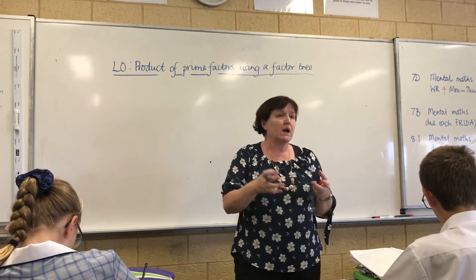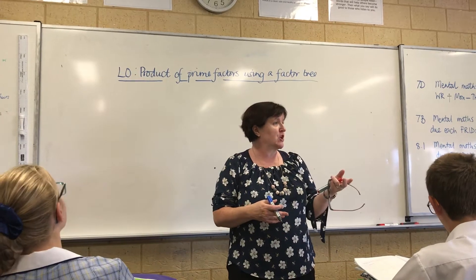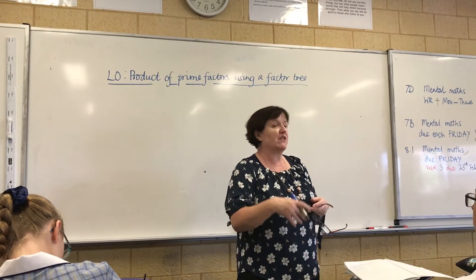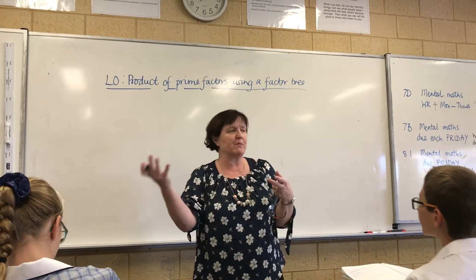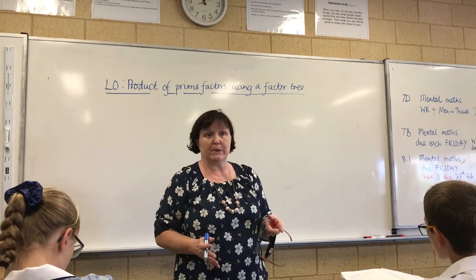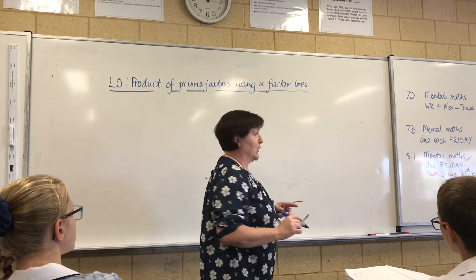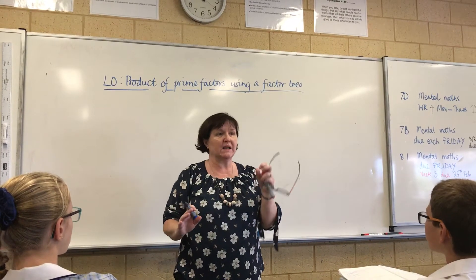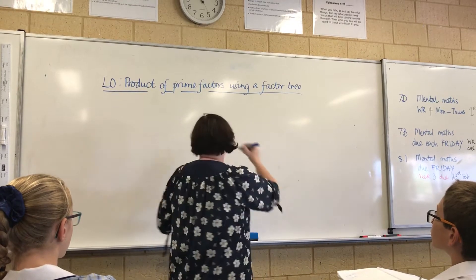Remember we looked at 24 and we saw that the prime factors were 2 and 3, so it was 2 times 2 times 2 times 3 to make 24. And the prime factors of 30 were 2, 3, and 5, so 2 times 3 times 5 made 30. What we're going to look at today though is much bigger numbers, and I'm going to show you a way of doing it nice and easily. So we start with the number we're dealing with at the top of our page — let's do 100 today.